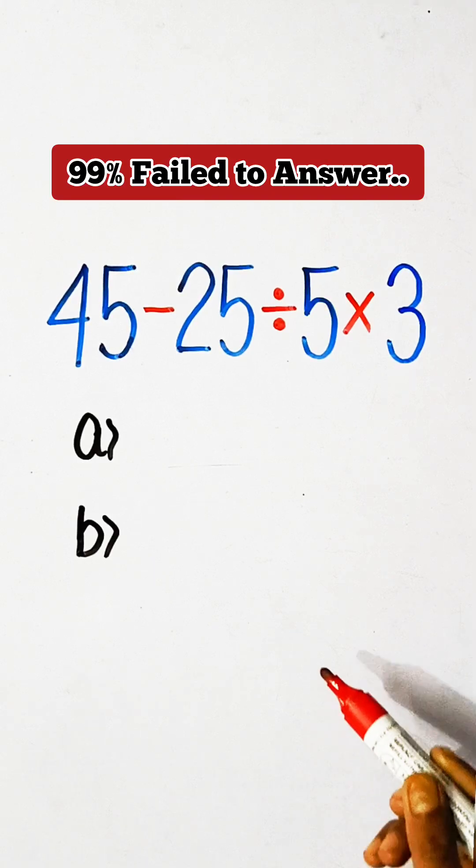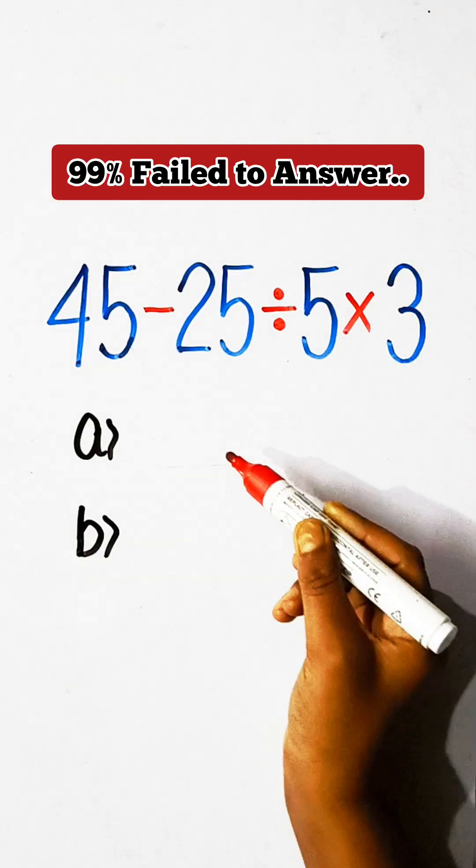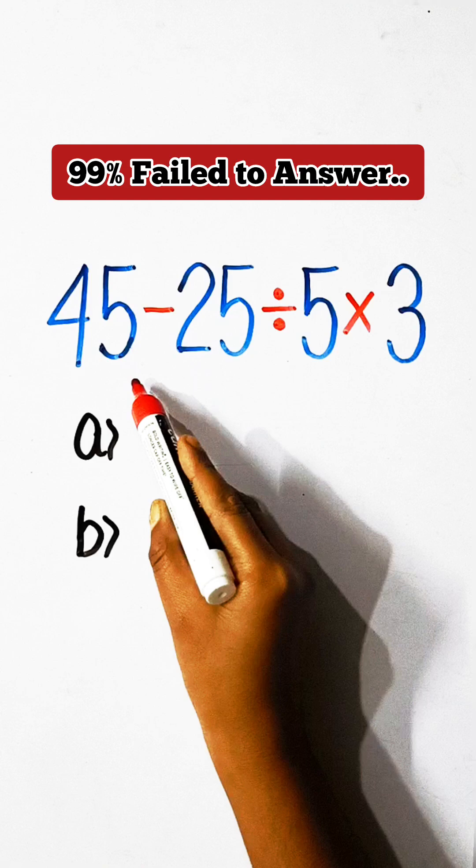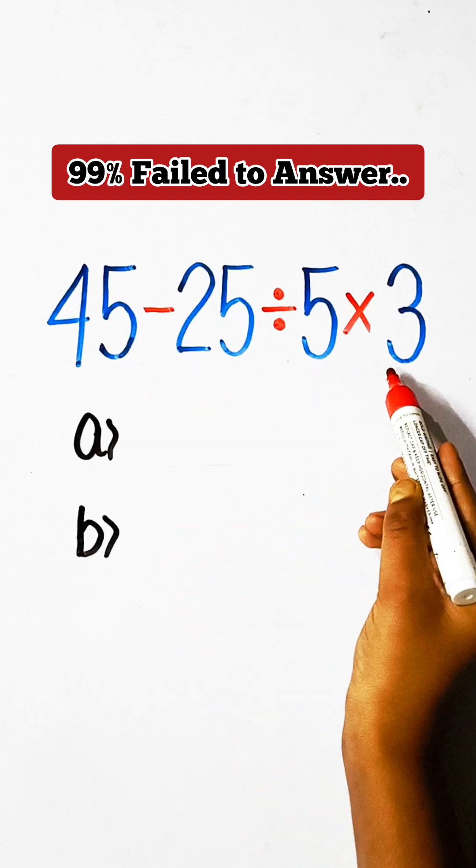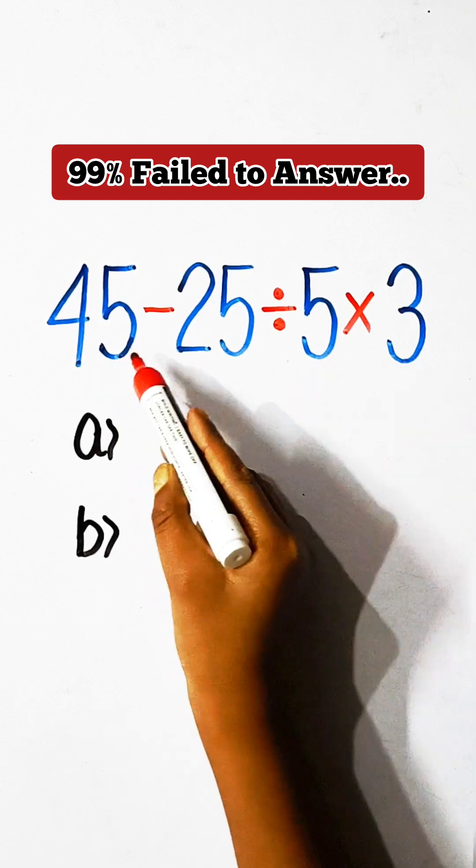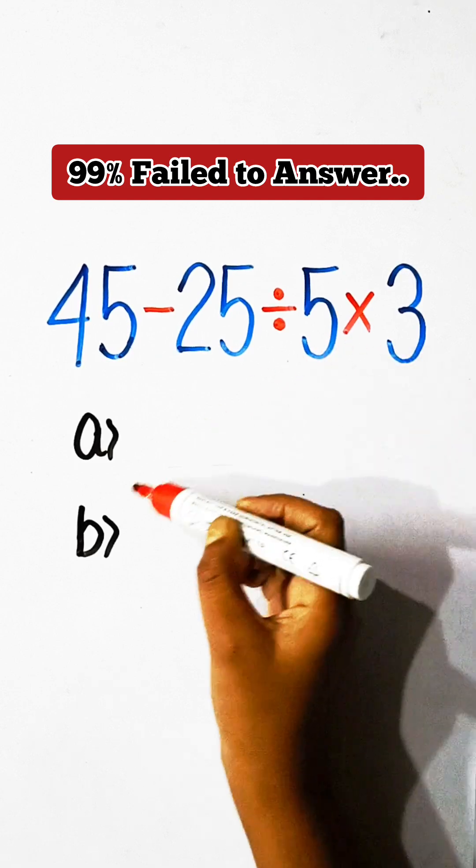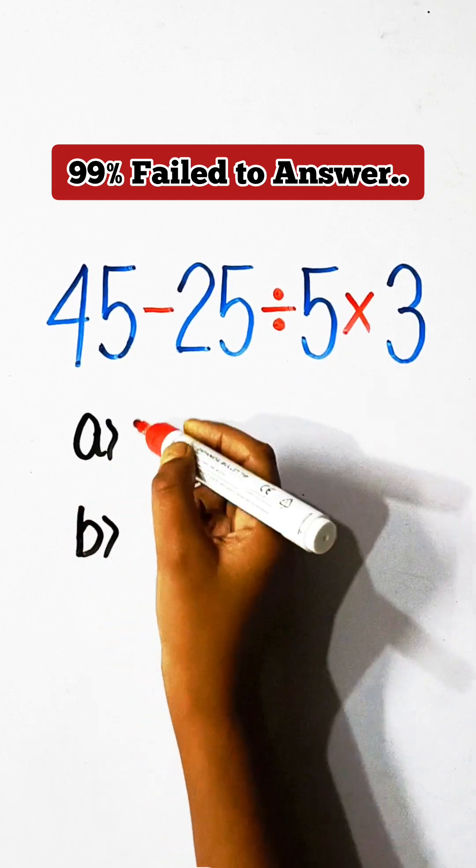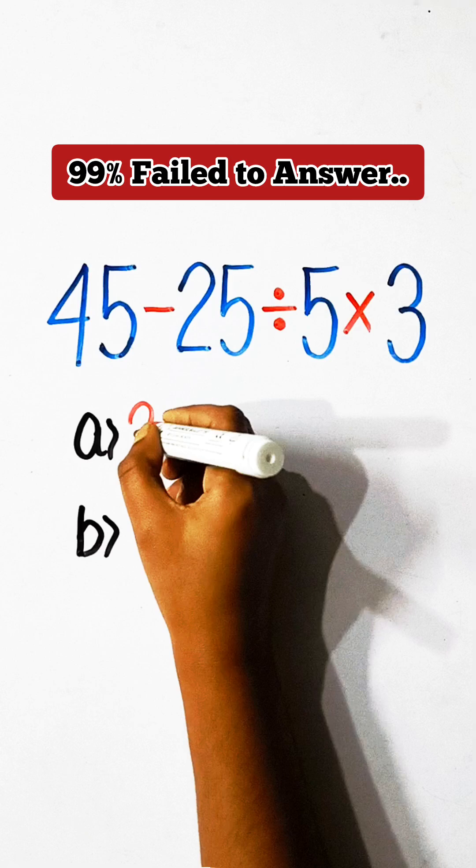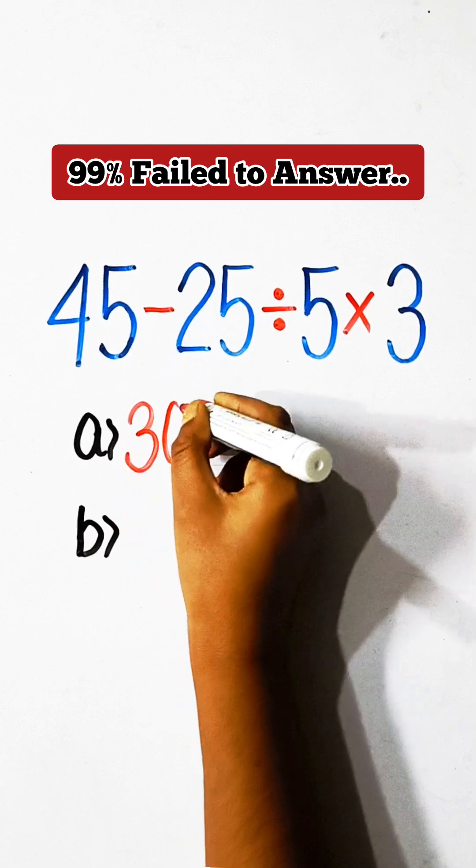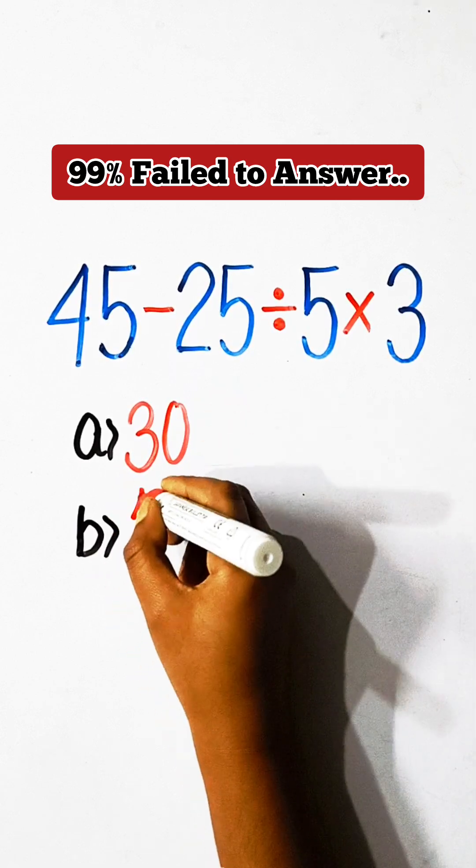Hello everyone, welcome back to my YouTube channel. In this video we will solve this math expression: 45 minus 25 divided by 5 multiplied by 3 equals to what? Option A: 30 or Option B: 12.